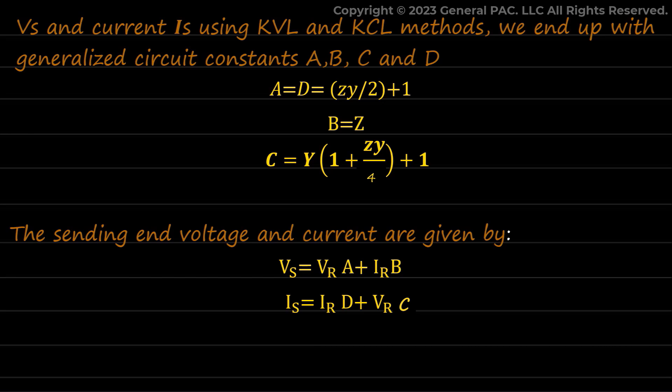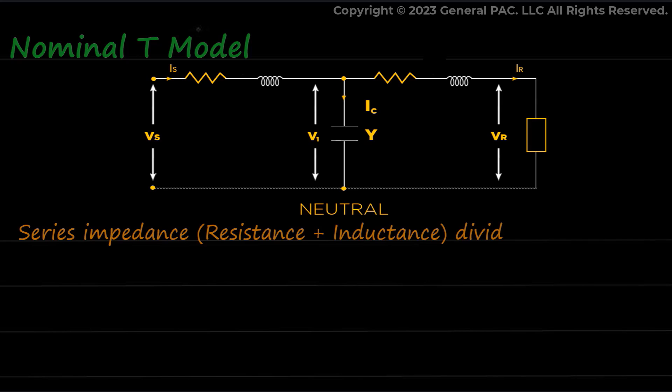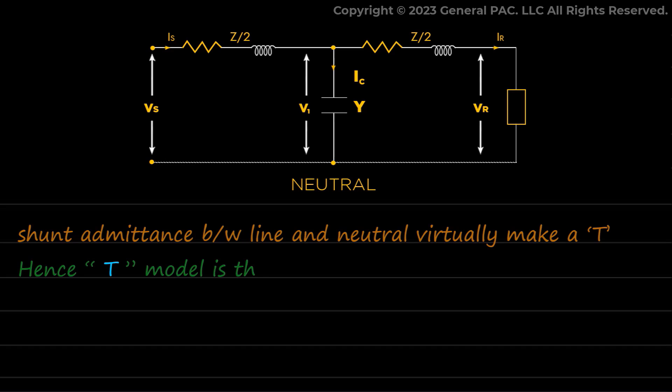Next, we have the nominal T model. Moving forward, we have nominal T model representation of medium line. Here we divide the series impedance (resistance plus inductance) in two equal parts, but the shunt admittance is concentrated in the center of circuit. The series impedance divided into two parts and shunt admittance between line and neutral virtually make a T, and hence T model is the name given to this representation.